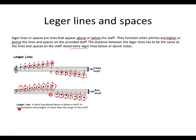Let's recap the definition of a ledger line. A ledger line is a short line placed above or below a staff to accommodate notes that are higher or lower than the range of the staff — ledger lines and spaces.